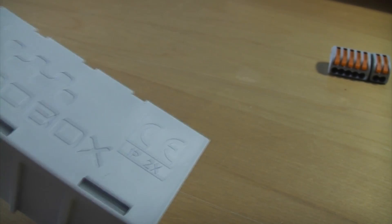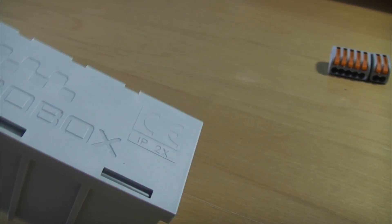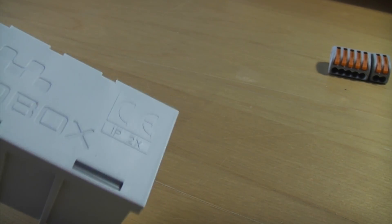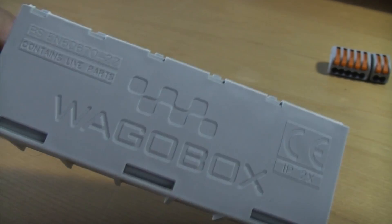And you can buy all these components from a WAGO distributor, or you can buy the WAGO box and the WAGO connectors from WAGObox.com.